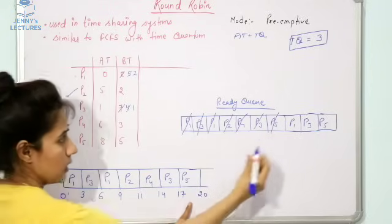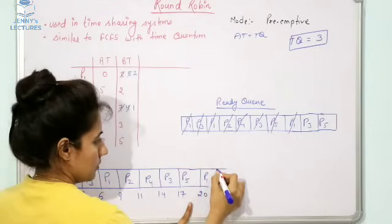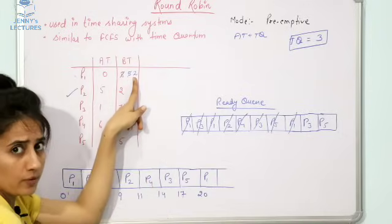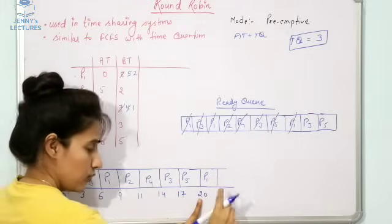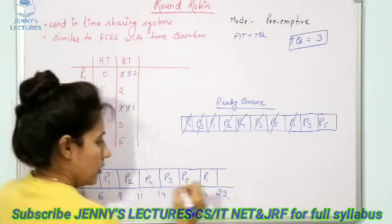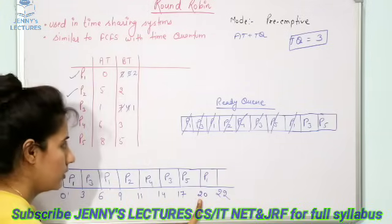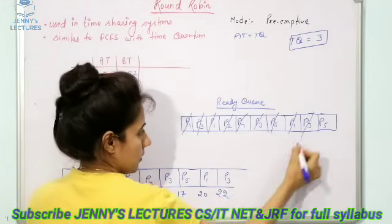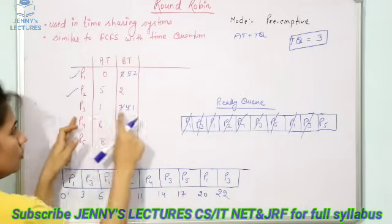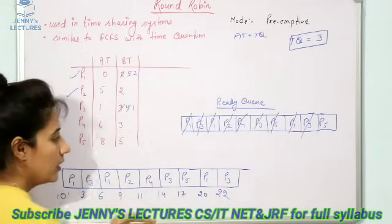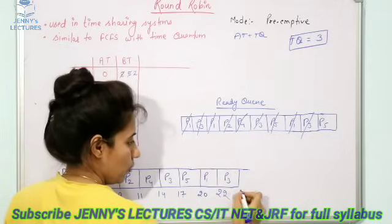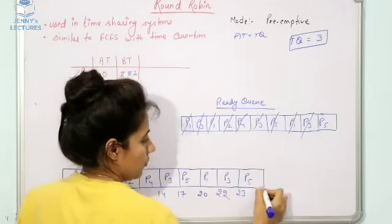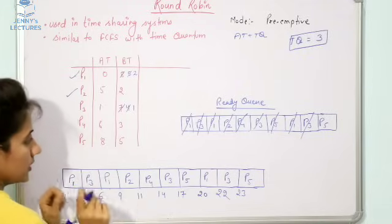Next is P1. Its remaining burst time is two units, so we run P1 for two units from time twenty to twenty-two. P1 finishes and is terminated. Then P3 runs with only one unit of time remaining, from twenty-two to twenty-three. P3 is also done.